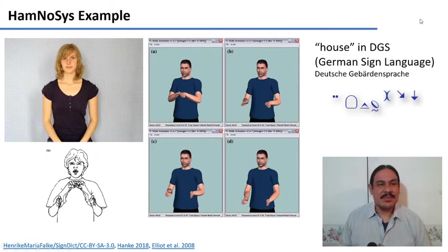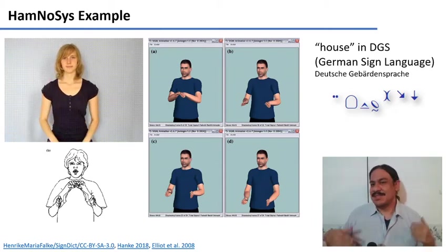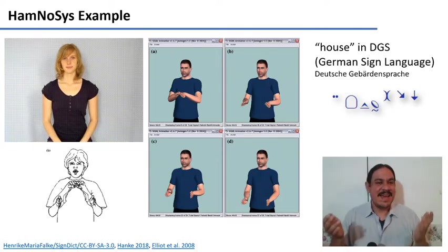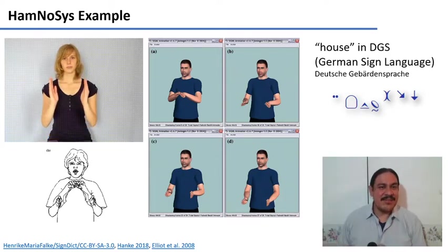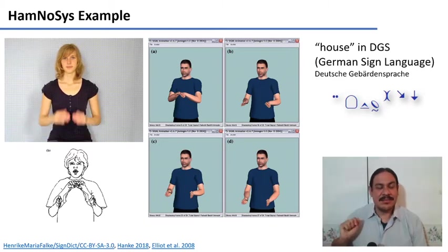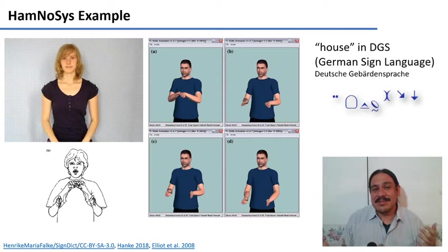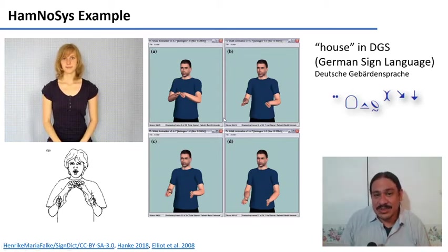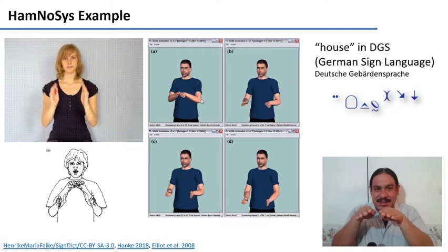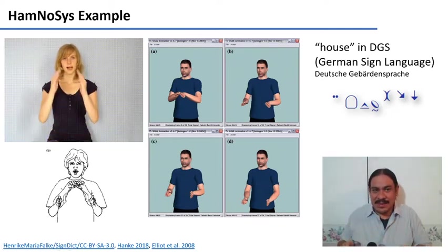So let me show you an example of HamNoSys. The girl there is making a sign from DGS, Deutsche Gebärdensprache, the German Sign Language. And the sign means house. So we have a video of the girl doing the sign, we have a schematic of how the sign is made, and we also have here like a virtual avatar of how the sign is produced. As you can see, several stages. Hands like this, hands going down, and then flipping and going downwards.